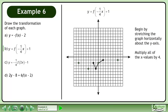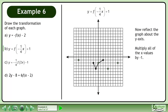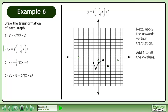Begin by stretching the graph horizontally about the y-axis — multiply all of the x-values by 4. Now reflect the graph about the y-axis — multiply all of the x-values by negative 1. Next, apply the upwards vertical translation — add 1 to all the y-values.